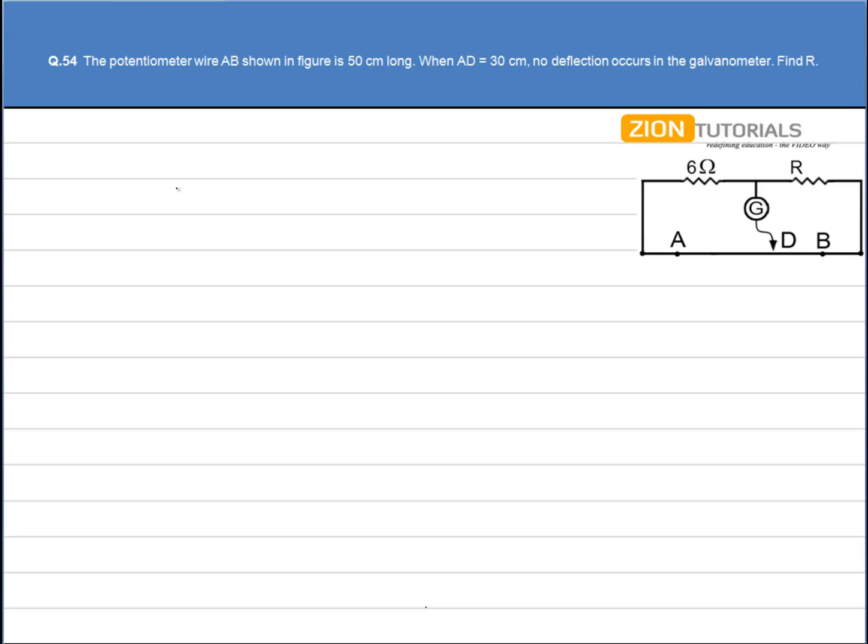The potentiometer wire AB shown in figure is 50 cm long. When AD is 30 cm, no deflection occurs in the galvanometer. We have to calculate the value of R.